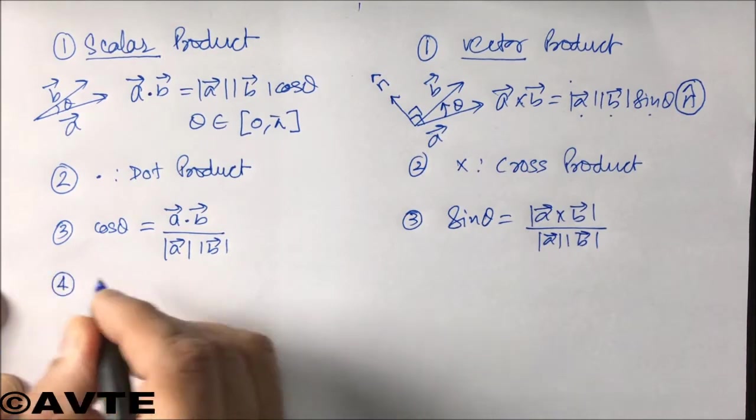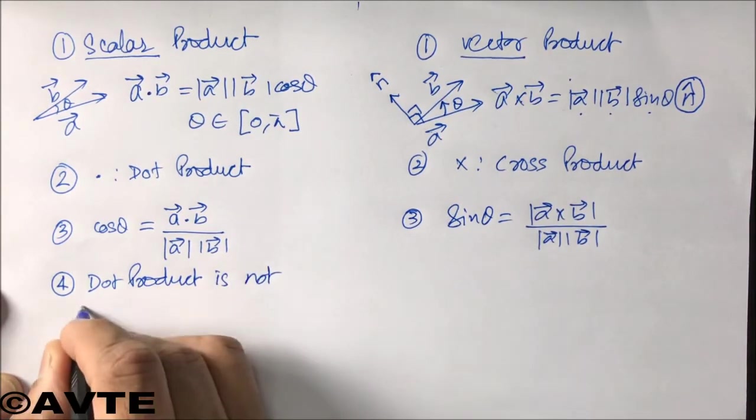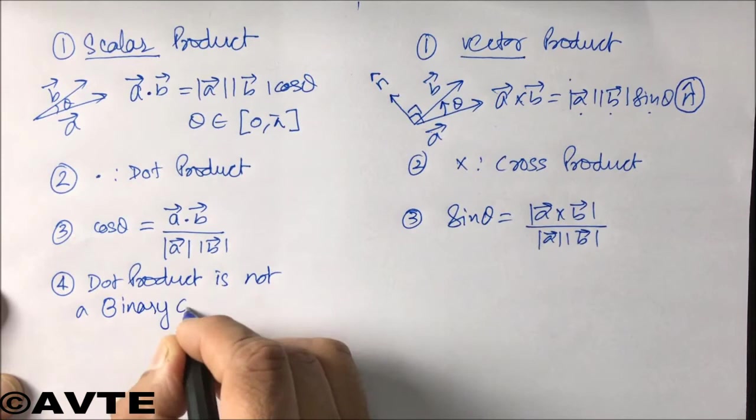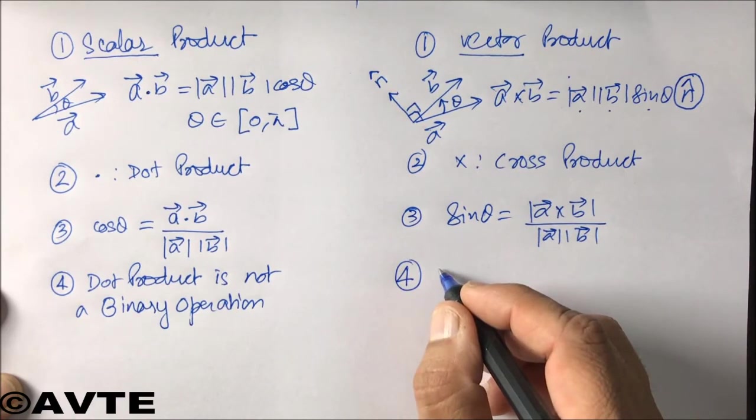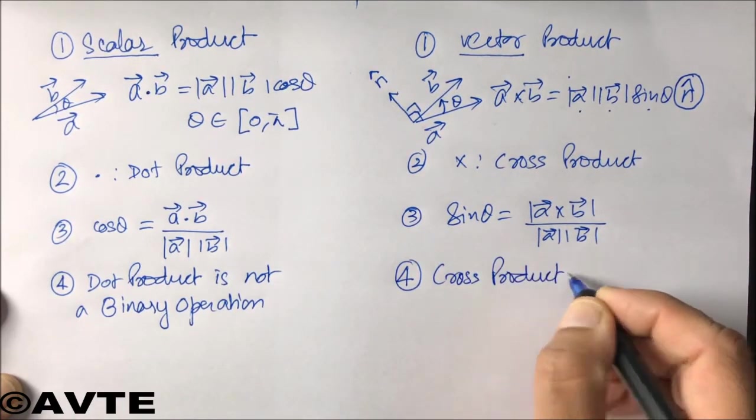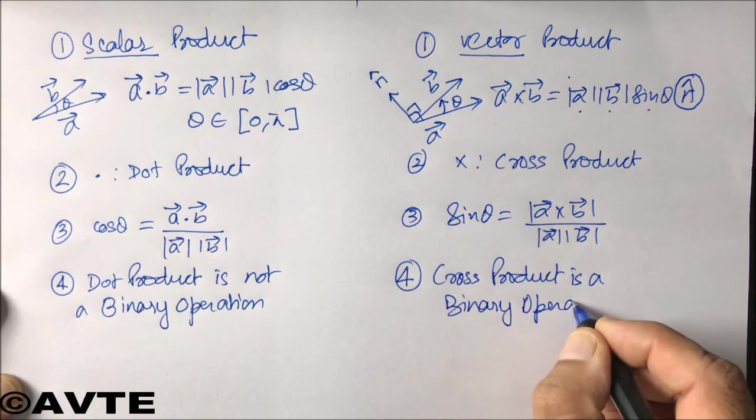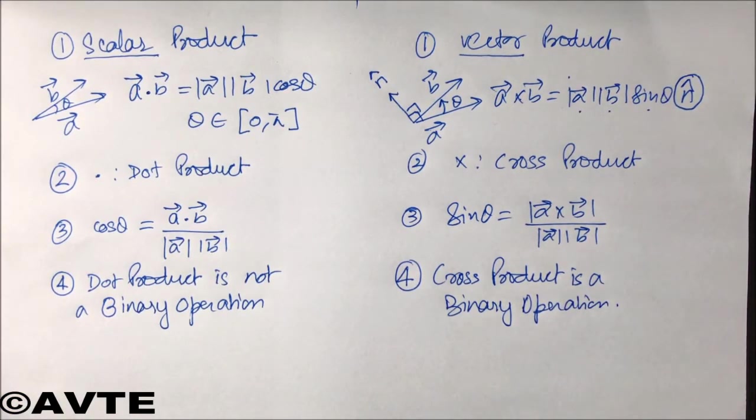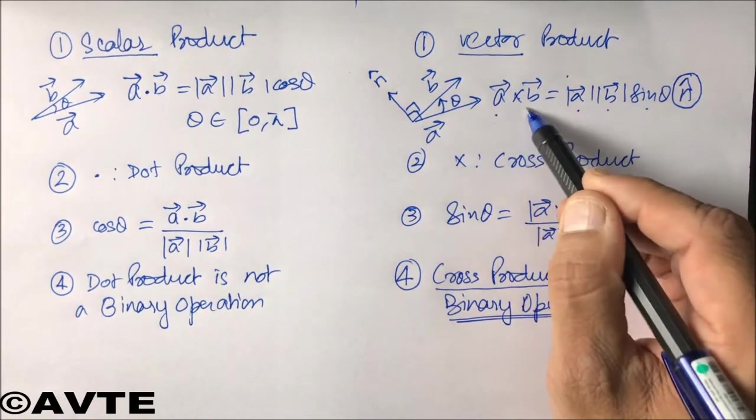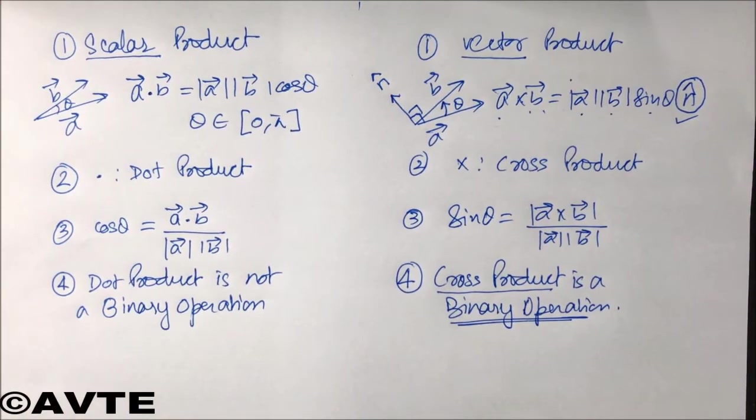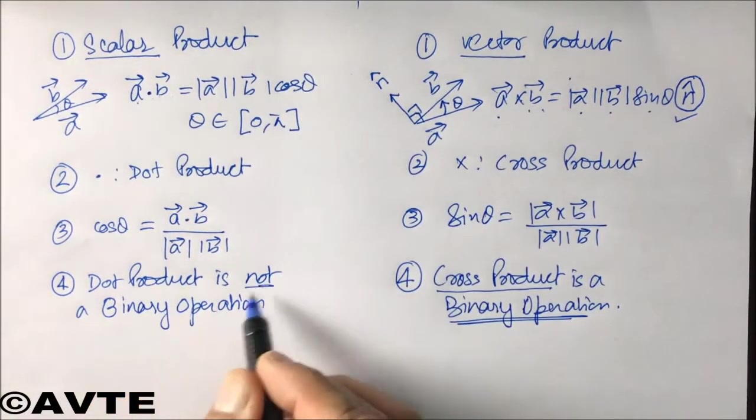Well, dot product - that is the scalar product - is not a binary operation. Whereas the vector product, that is the cross product, is a binary operation. That is, if we take two vectors and multiply them, then the cross product obeys the closure law. Vector cross vector is again a vector, whereas a dot b, vector dot vector, is not a vector. Therefore it is not a binary operation because it is not obeying the closure law.